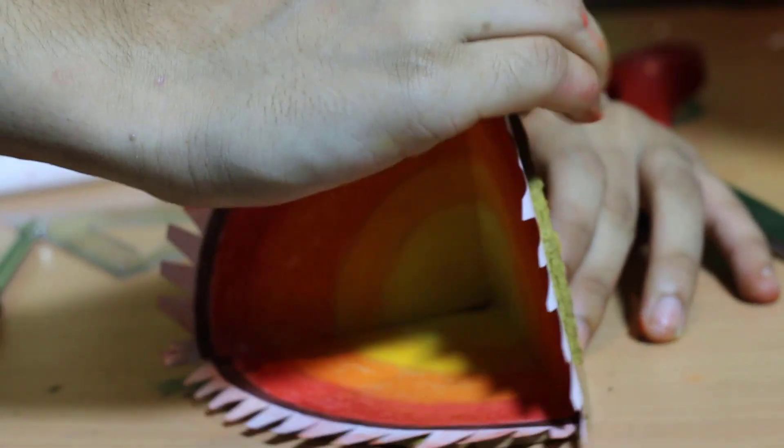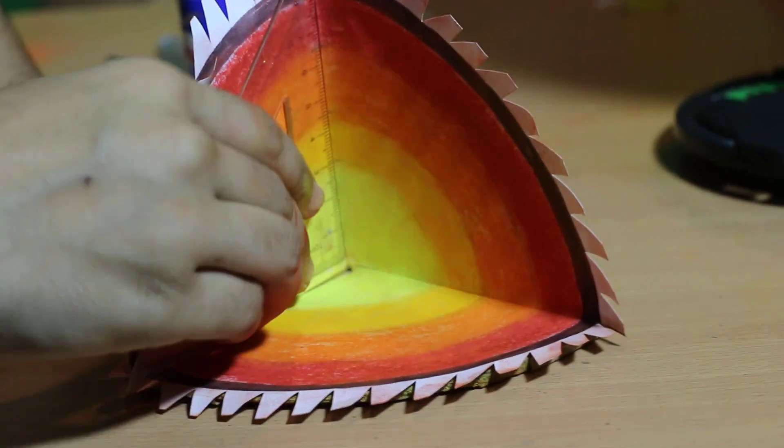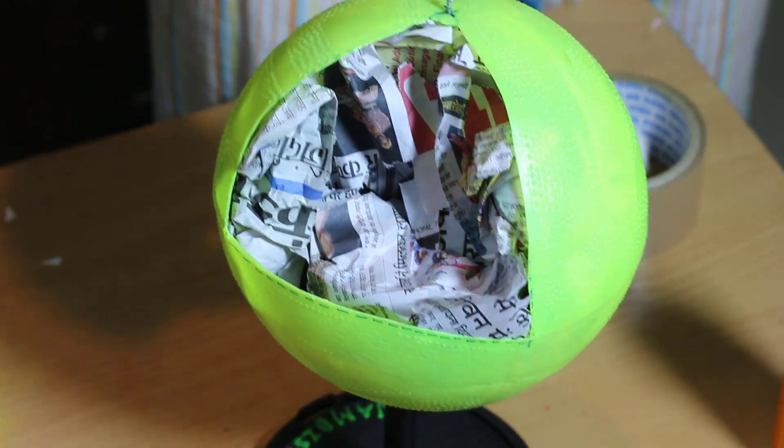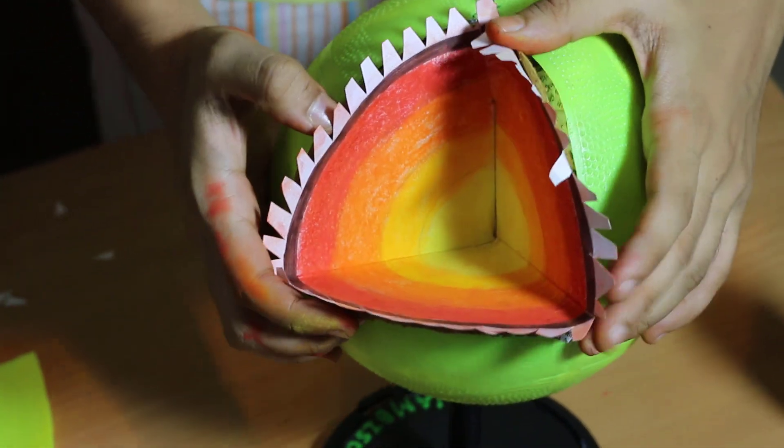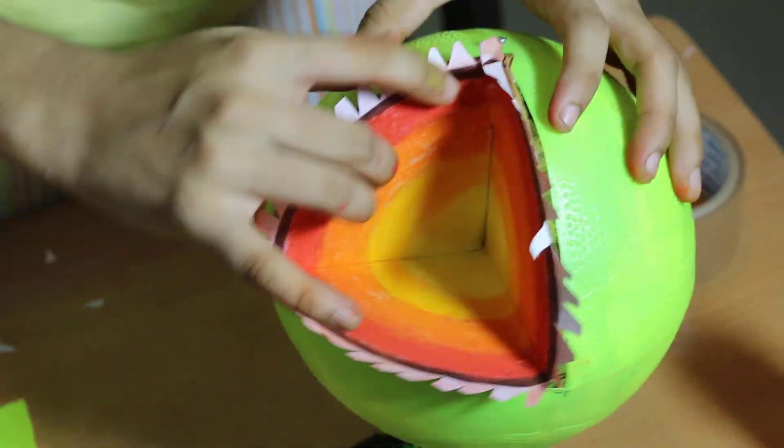Stick this paper on the cardboard. And place it in the empty space on the ball and stick it with the help of a micropore tape.